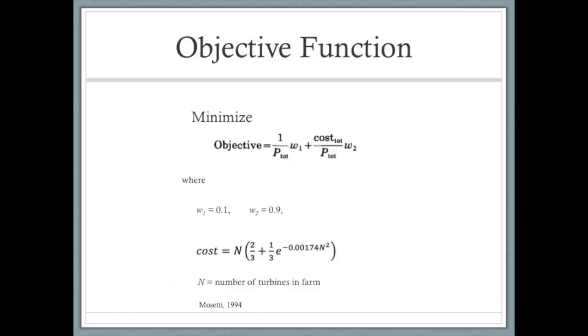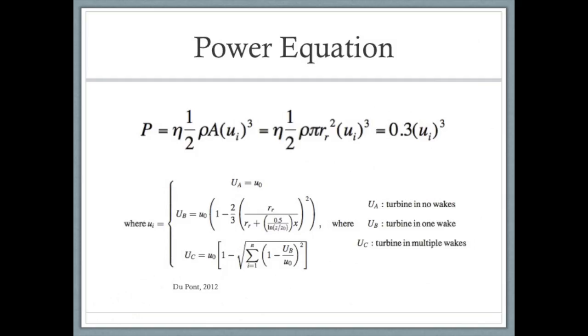The cost equation is derived from Mosetti's analysis, a simplified non-dimensional cost per year for n number of turbines in a given farm.